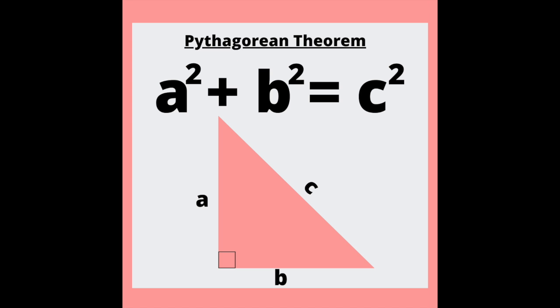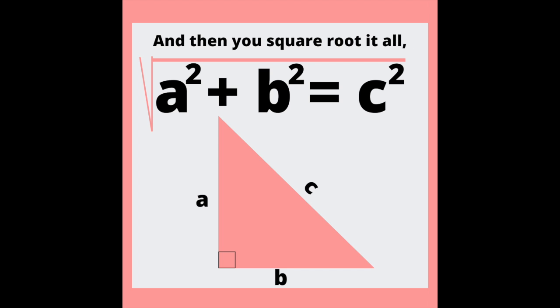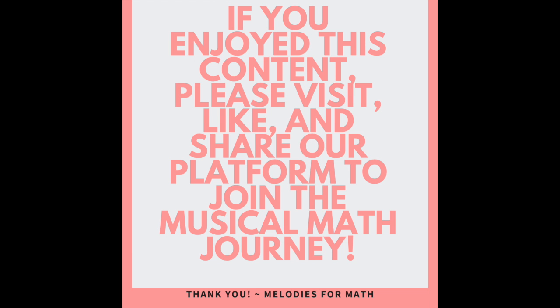a squared plus b squared equals c squared. a squared plus b squared equals c squared. When you square and add the legs and then you square root it all, the hypotenuse is what you get.